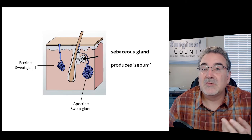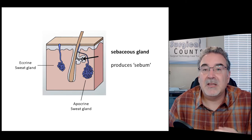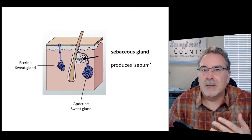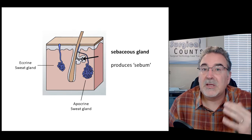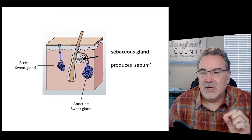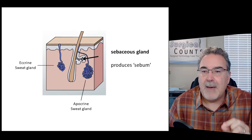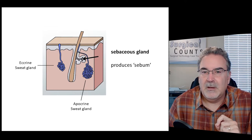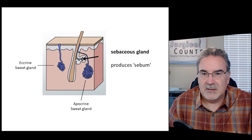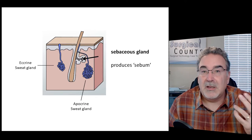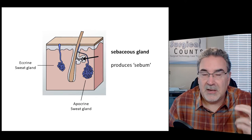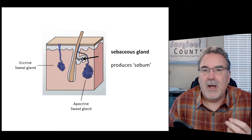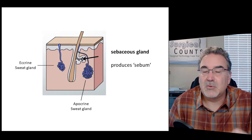We also have two types of sweat glands. Sweat is the watery substance put out across the skin to help keep us cool. The two types are the apocrine sweat gland, in which case the sweat comes out by the hair follicle, and the eccrine gland, in which case the sweat simply comes out through a natural hole in the skin.